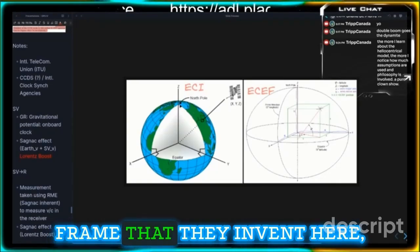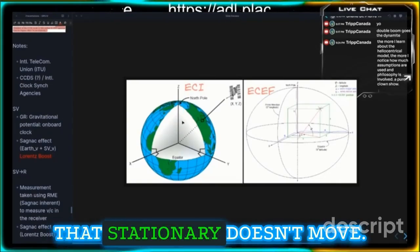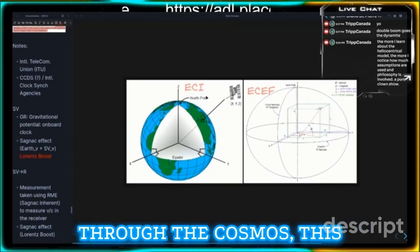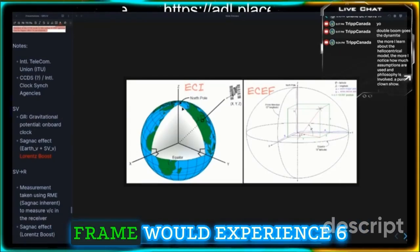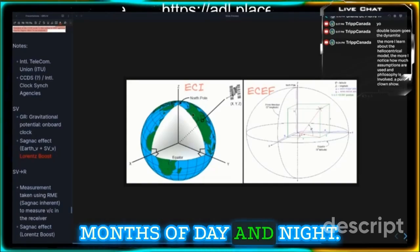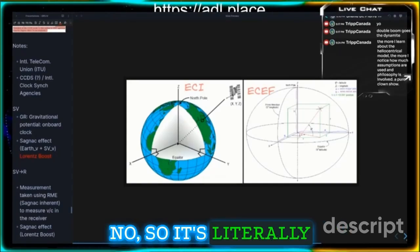They need a way to derive the measurements and then add in a little earth rotation correction after the fact. So they have this fictitious frame that they invent here that's stationary, doesn't move. In their model of moving through the cosmos, this frame would experience six months of day and night. So it's literally just an ether frame.